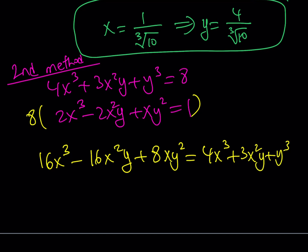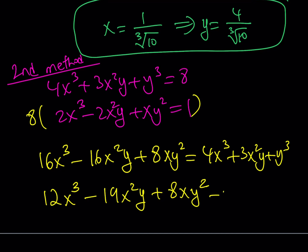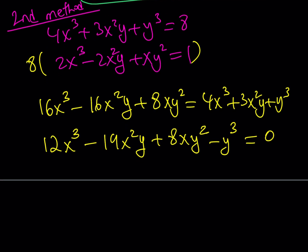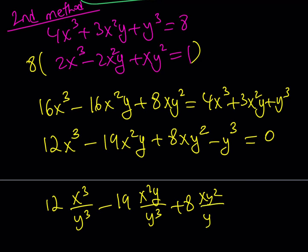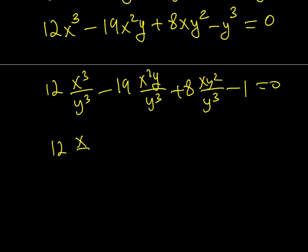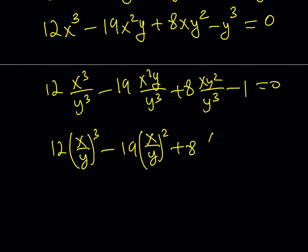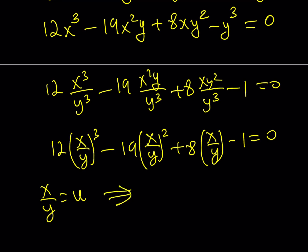Now, dividing both sides by y cubed, something interesting happens: you get 12 times (x/y) cubed minus 19 times (x/y) squared plus 8 times (x/y) minus 1 equals 0. If you substitute u equals x/y, just like before, you'll get the u values and then substitute back. That's the second method — I'll leave the rest to you to complete.